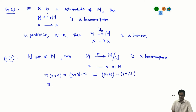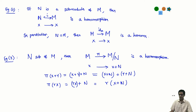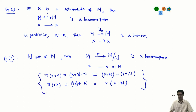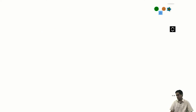Similarly, π(rX) is the coset of rX, and by definition that is exactly how scalar multiplication is defined on the quotient module. These two equations establish that the map π is in fact an R-module homomorphism. So we have these natural classes of examples: the inclusion and the projection maps.